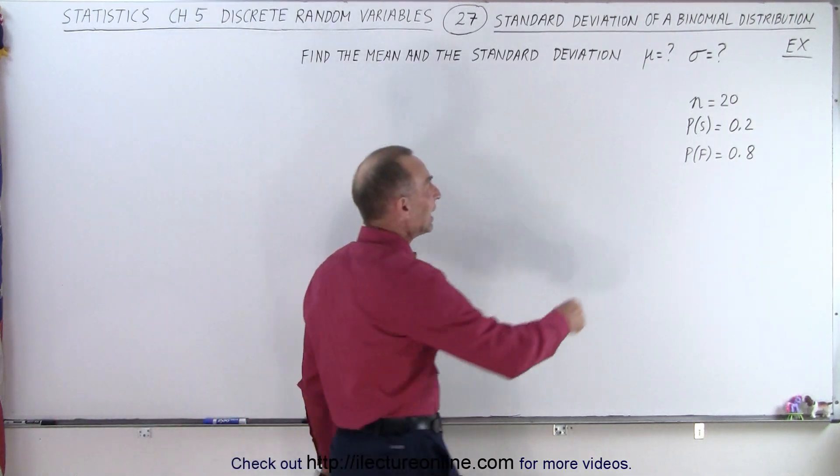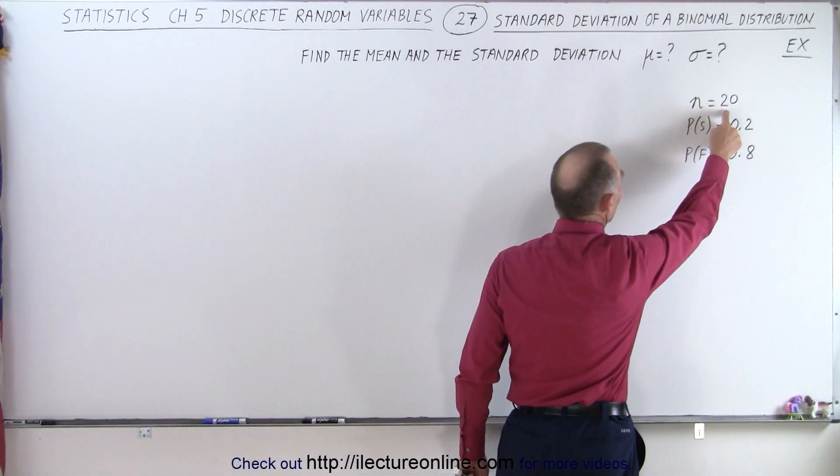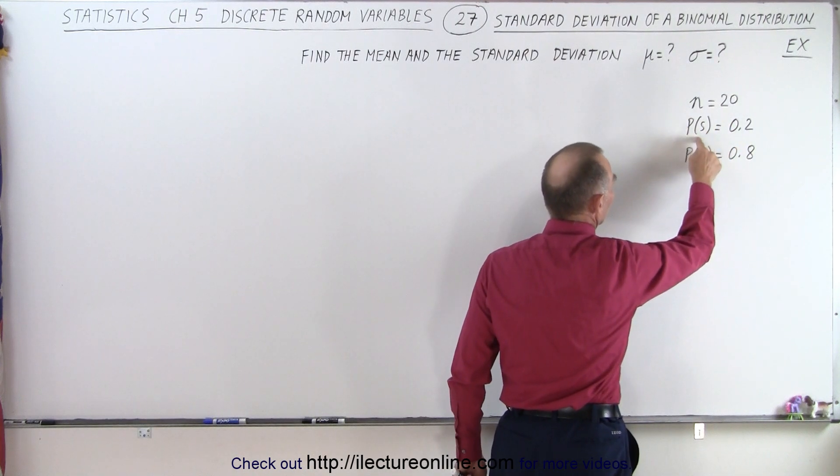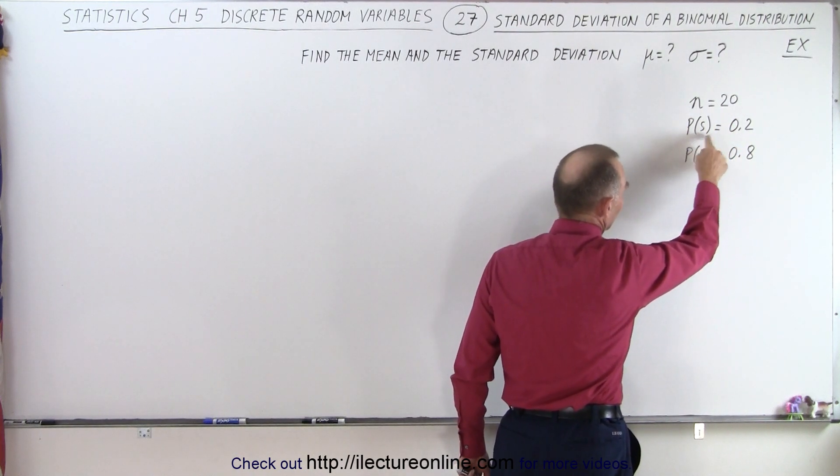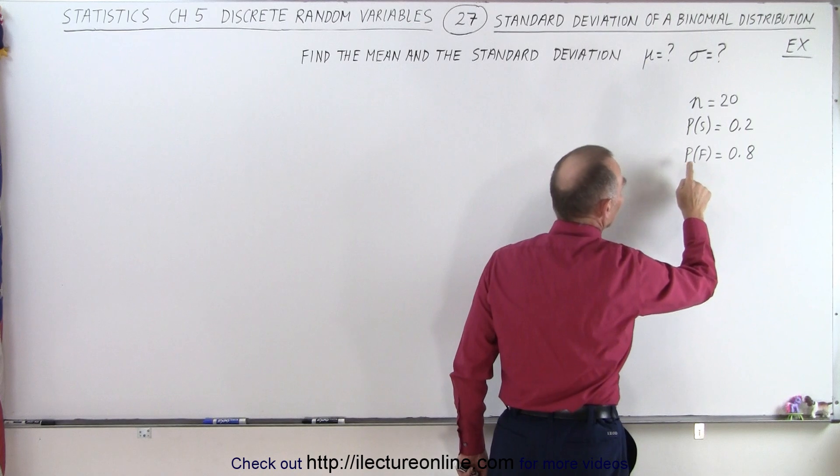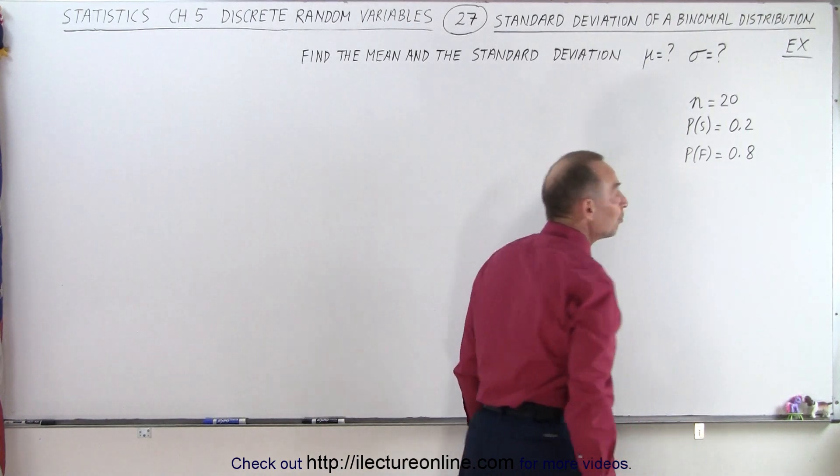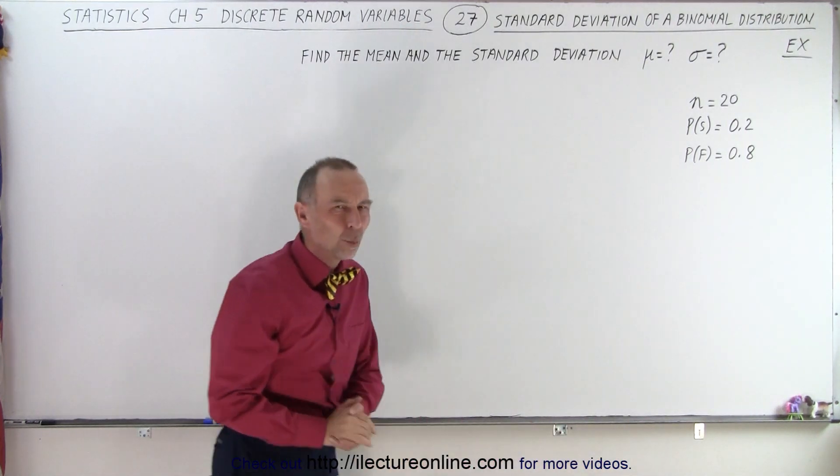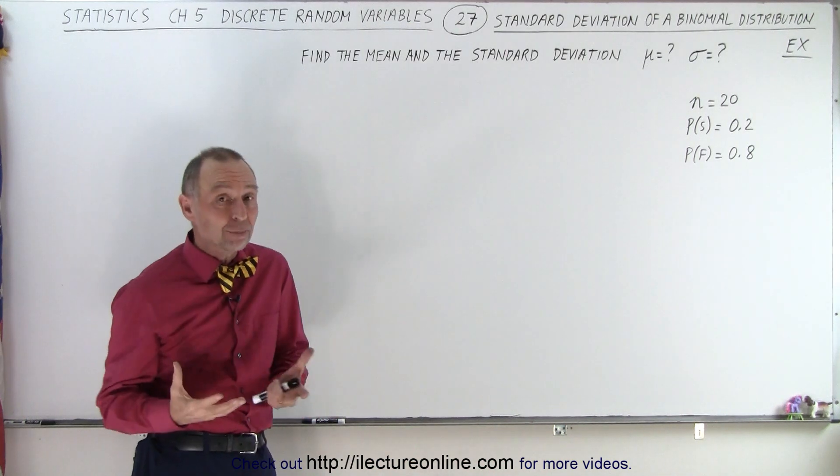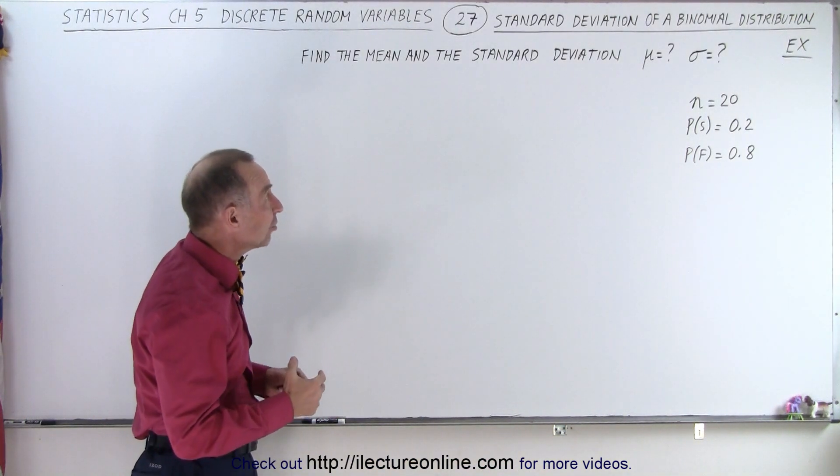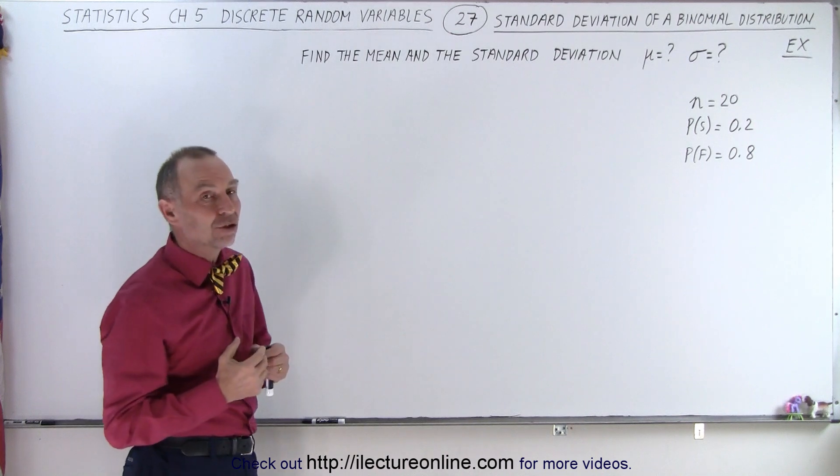Here we have n equals 20, that means there's 20 trials. The probability for success is 0.2 or 20%, and the probability of failure is 0.8. So what is the mean, the average expected outcome, and what is the standard deviation?